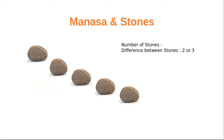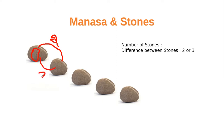Let me explain: initially you are at the first stone and the position is zero. From the first stone to the second stone you can either have a difference of two or a difference of three. Based on this, we have two possible values at the second stone — it can be either two or three.